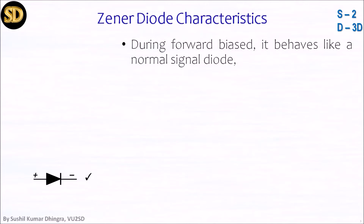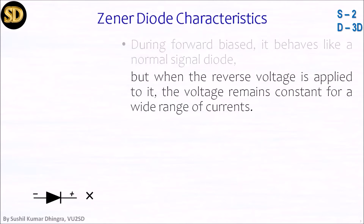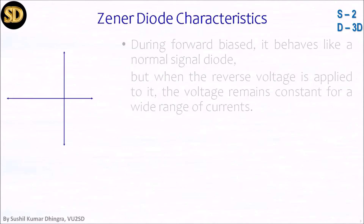During forward bias, the Zener diode behaves like a normal, conventional, or ordinary diode. But when the reverse voltage is applied to it, the voltage remains constant for a wide range of currents, as shown in the voltage and current diagram on your screen.